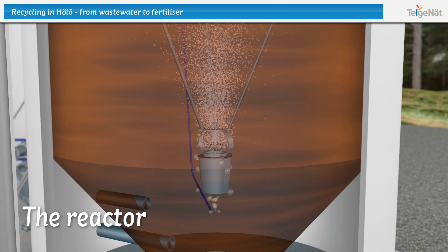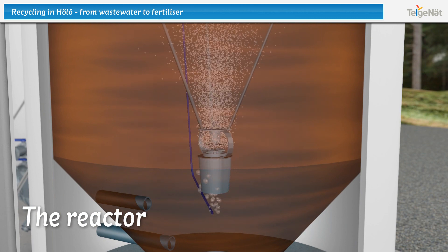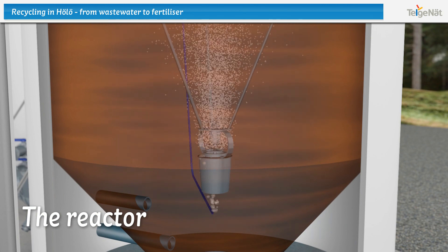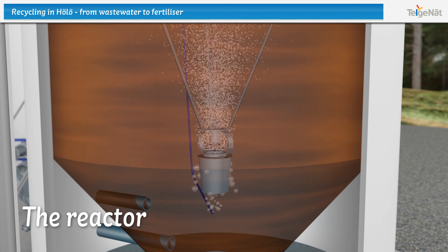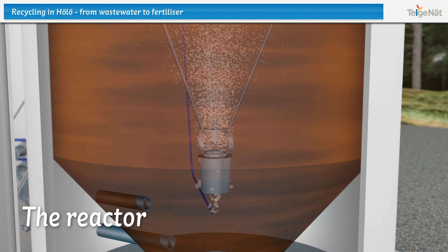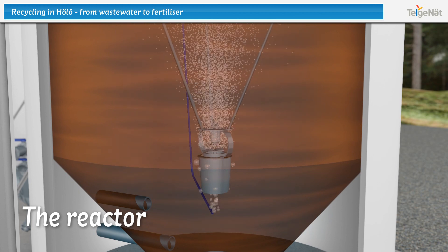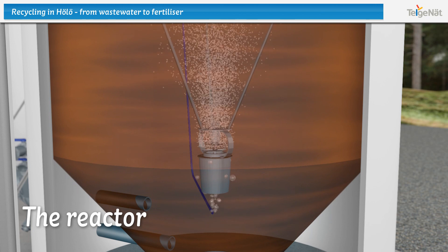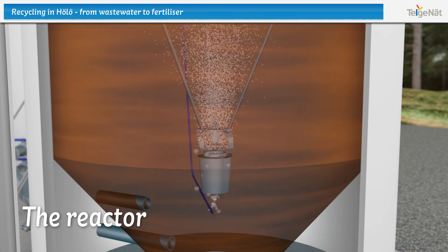Air is added at the bottom of the reactor and is whipped to the point of creating sufficiently large bubbles. The air rises in the reactor and generates warmth, as micro-organisms in the sewage consume oxygen. The escaping air returns to the receiving wells and exits through the biofilter.